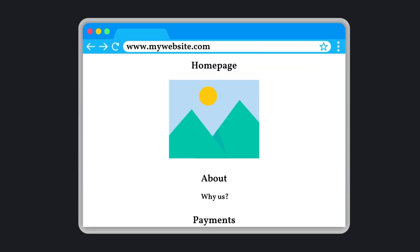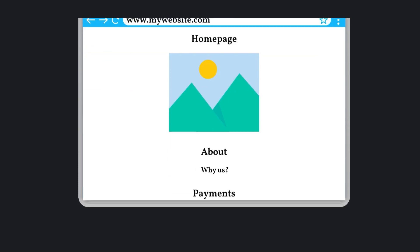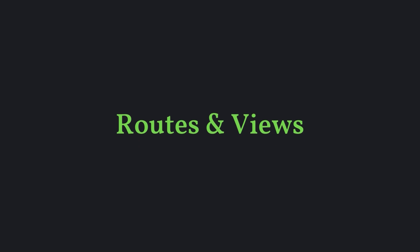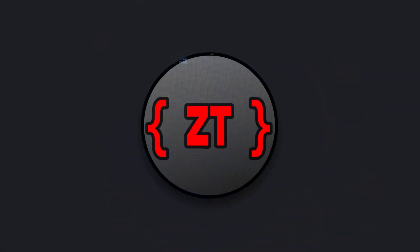Imagine you have a website and instead of displaying all your information on one page, you want to split it up and have different pages or views. We can do this by diving into Flask routes and views. Hello and welcome back to the channel. My name is Zech and we will be continuing this Flask series.